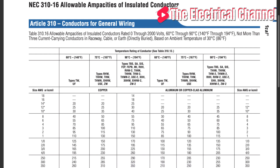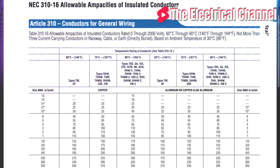Also, depending on the insulation, the ampacity changes as well. So for example, the TC chain number 12 has a max ampacity of 30 amps. The number 10 has a max ampacity of 40, and the number 8 has a max ampacity of 55.